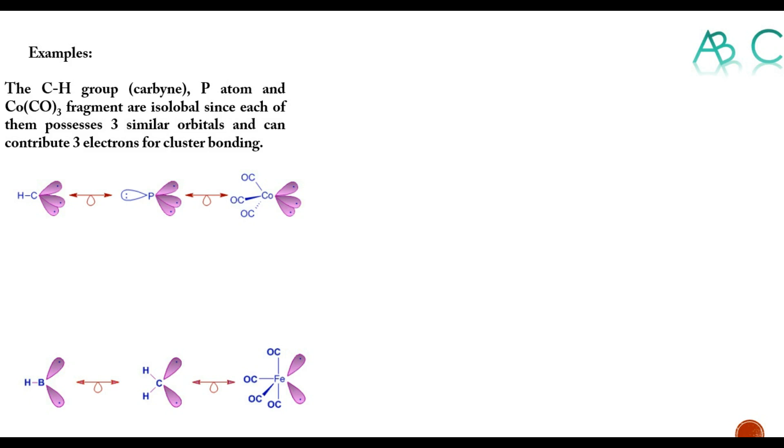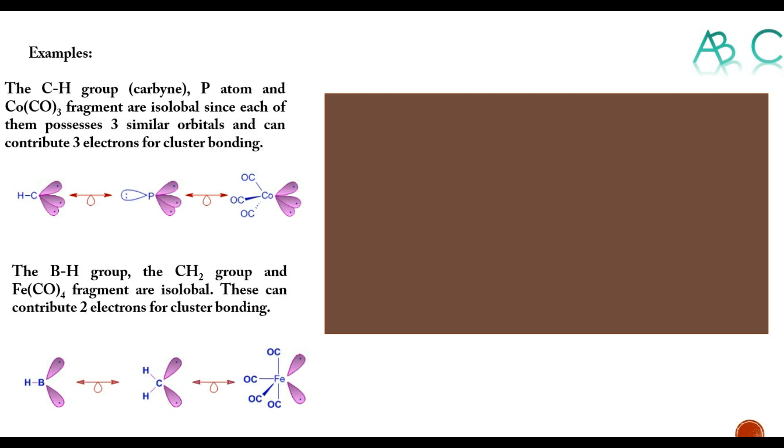The second example: the BH group, CH2 group, and Fe(CO)4 fragment are isolobal because they have two orbitals as is seen with two electrons.